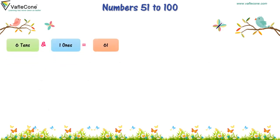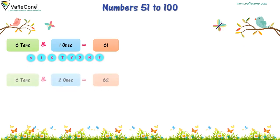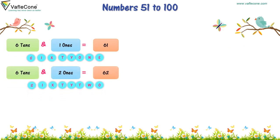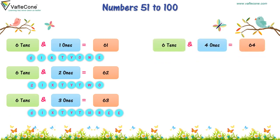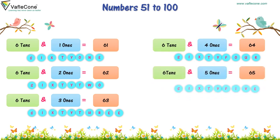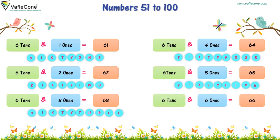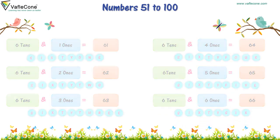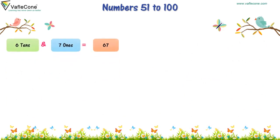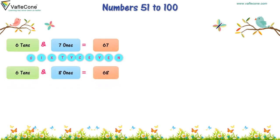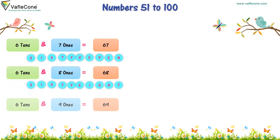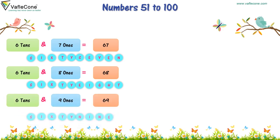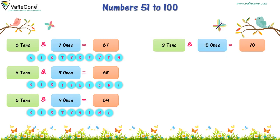6 tens and 1 one is equal to 61. 6 tens and 2 ones is equal to 62. 6 tens and 3 ones is equal to 63. 6 tens and 4 ones is equal to 64. 6 tens and 5 ones is equal to 65. 6 tens and 6 ones is equal to 66. 6 tens and 7 ones is equal to 67. 6 tens and 8 ones is equal to 68. 6 tens and 9 ones is equal to 69. 6 tens and 10 ones is equal to 70, or 7 tens is equal to 70.